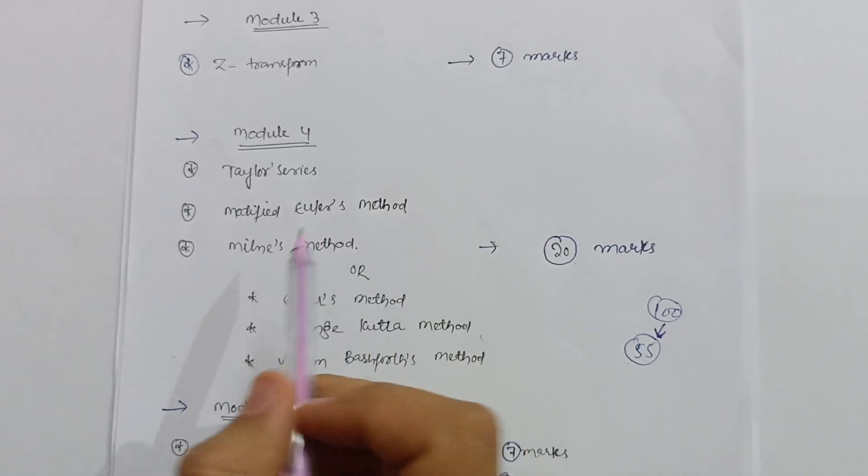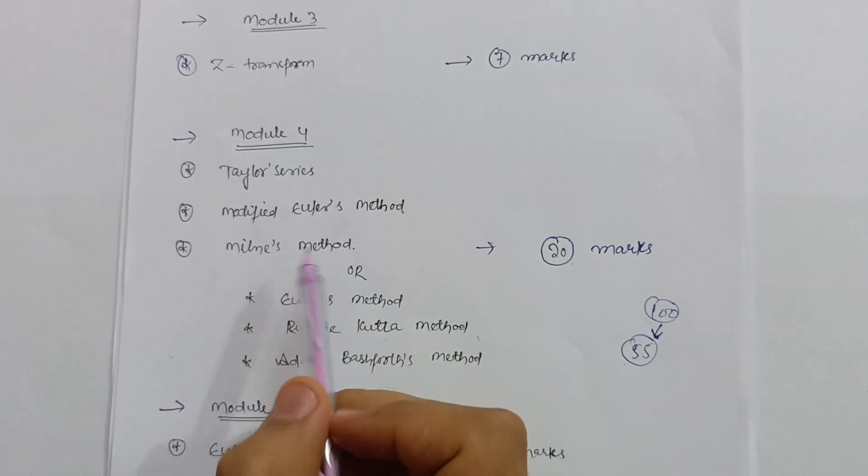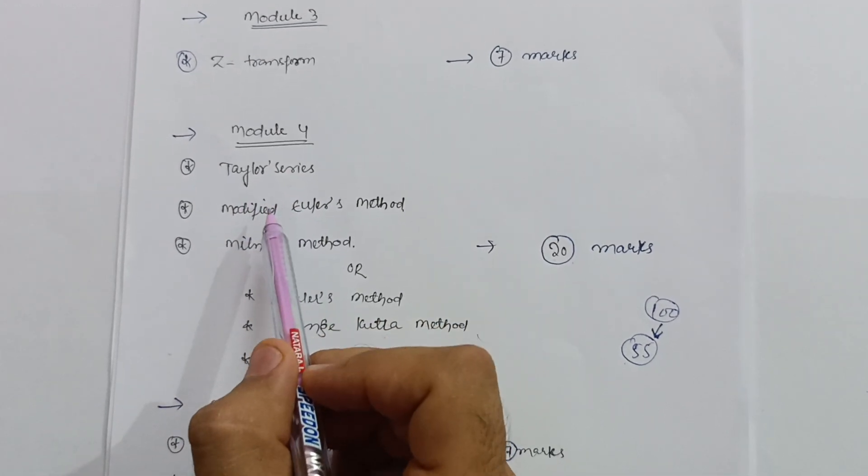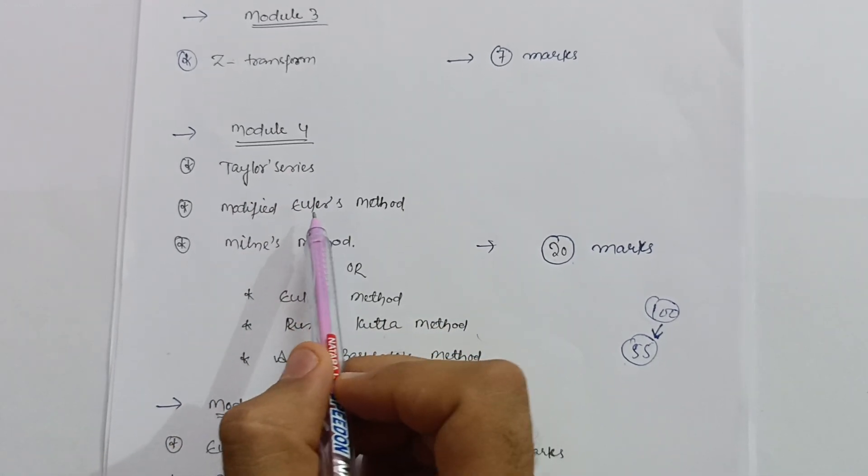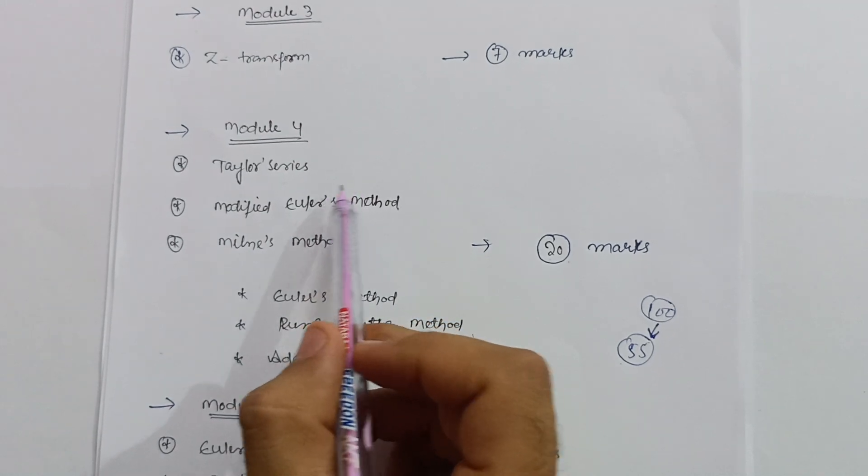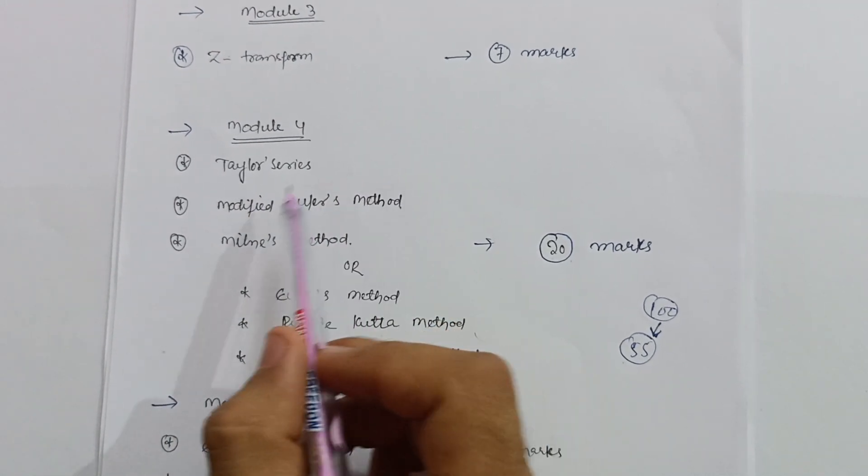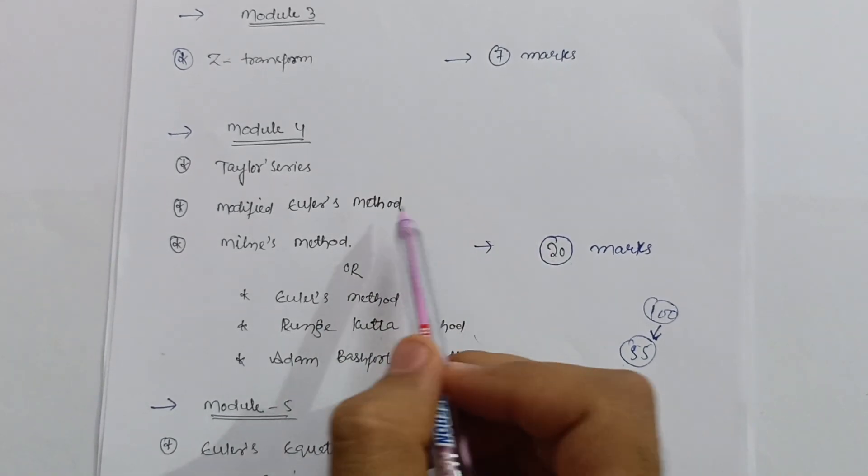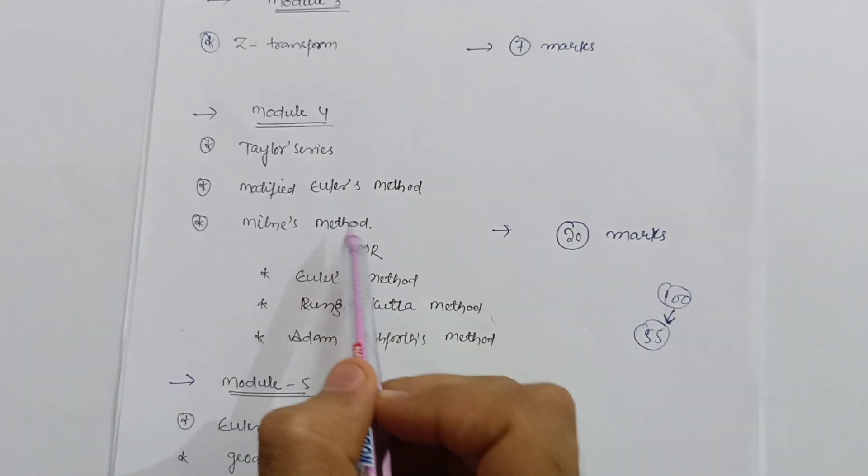Then third one is Milne's Method. Friends, these are whole topics that are formula-based questions. You can just remember the formulas, you can just refer them, and then only you can make 20 marks possible in this particular module.